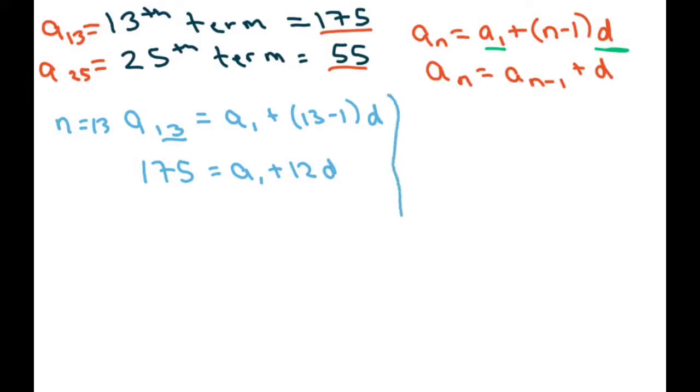Now for the second one, we have our n is 25. So a sub 25 is 55 equals a sub 1 plus, and we have 25 minus 1 is going to be 24d. So that's going to be 24d.